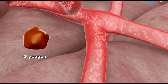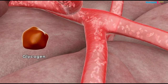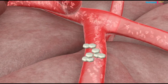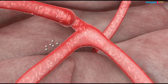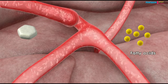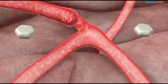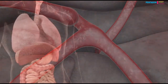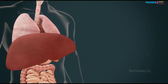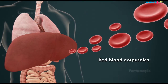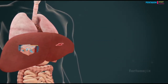The liver produces glycogen from excess sugars in a process called glycogenesis. When sugar levels in the blood drop, the liver converts glycogen to glucose. The liver also produces glucose from amino acids and fatty acids; this process is called gluconeogenesis.